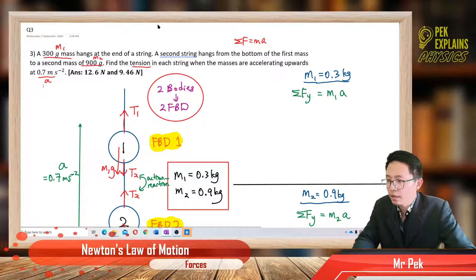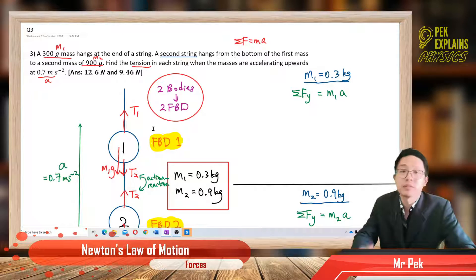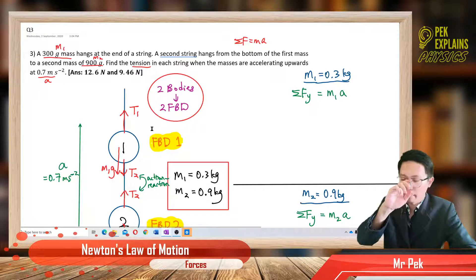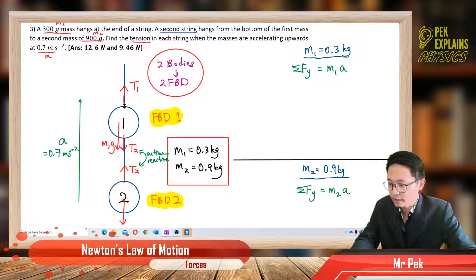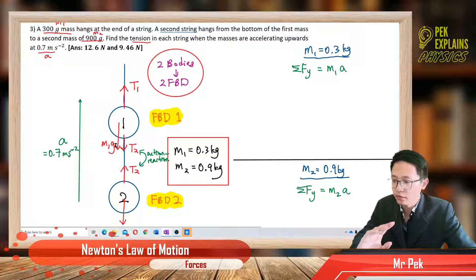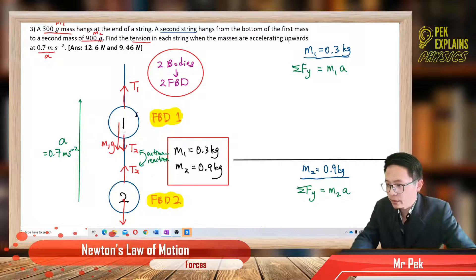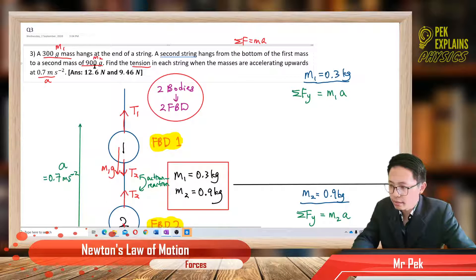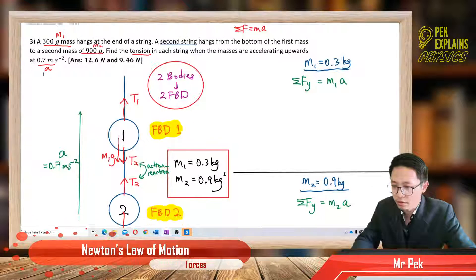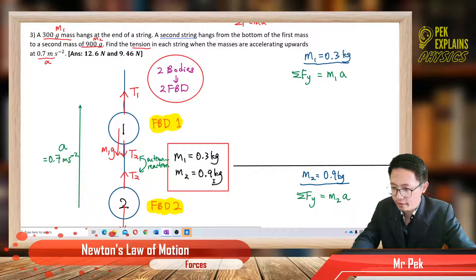I already drew out the situation here. We must first start off with a free body diagram. These are the situations — you must always draw the free body diagram first. Mass one is given in grams, so remember to change to SI units, kilograms. I already changed it to kilograms.